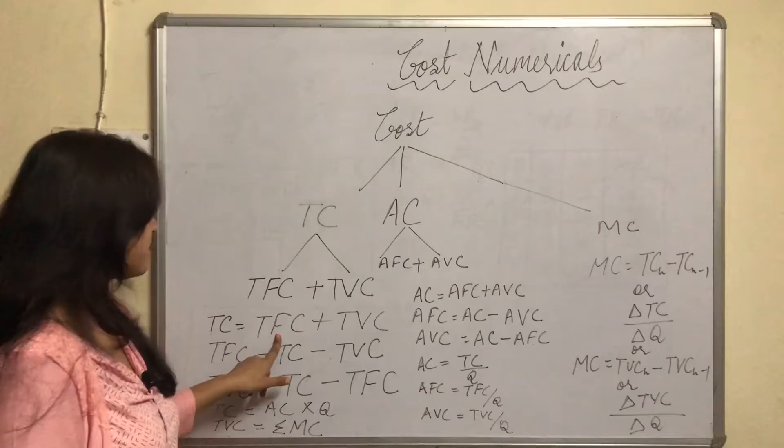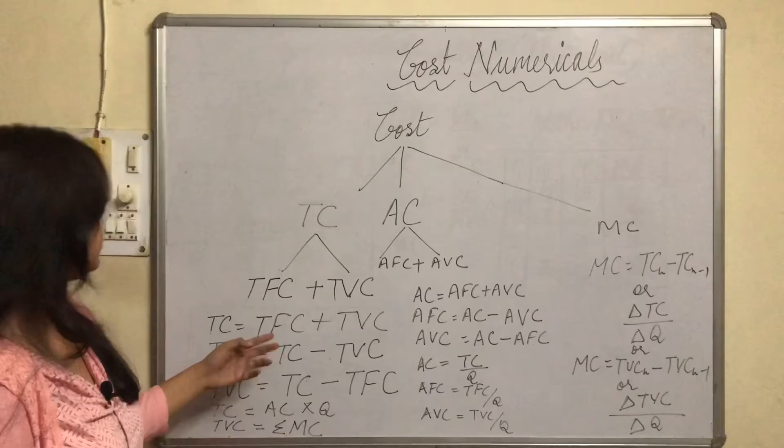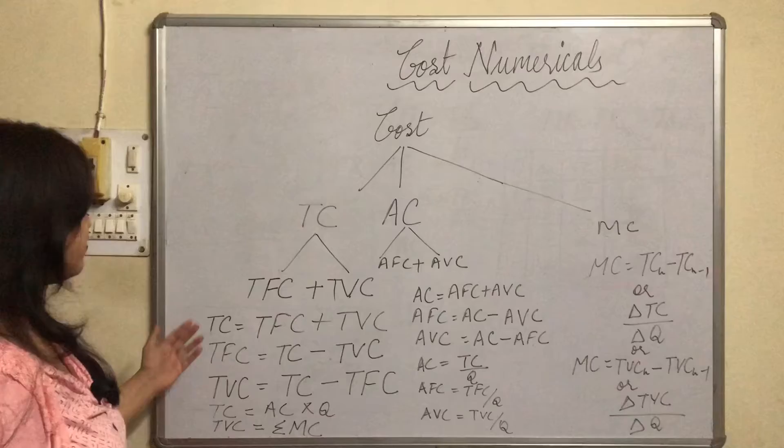We can have one formula: total cost equals total fixed cost plus total variable cost. And if we want to find total fixed cost or total variable cost,